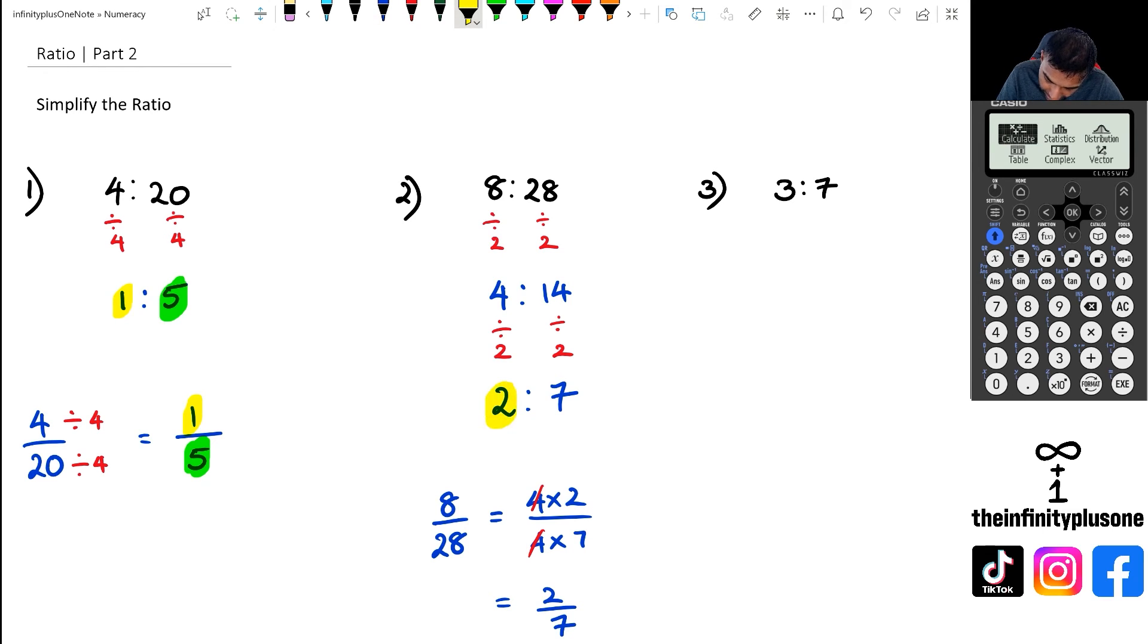And as you can see once again, simplifying ratio has kind of got the similar ideologies with simplifying fractions as well. And finally going to question 3, when we have 3 to 7, you can see that 3 and 7 there's actually no common factors at all, which means we can't actually simplify that particular ratio any further. And even if you look at it as a fraction, 3 over 7 as a fraction, you can't really simplify it any further. So that's just going to stay as 3 over 7. In this case you cannot simplify the ratio anymore.